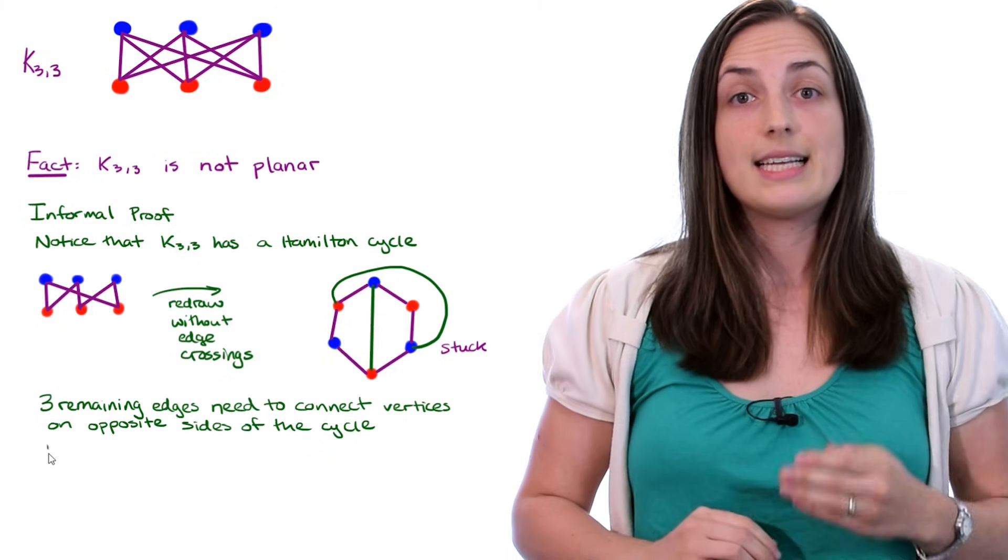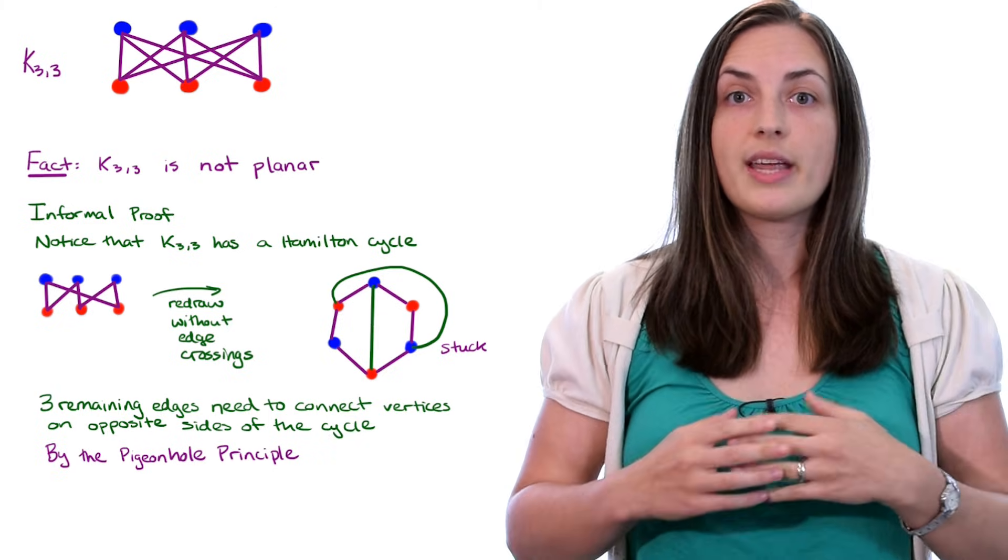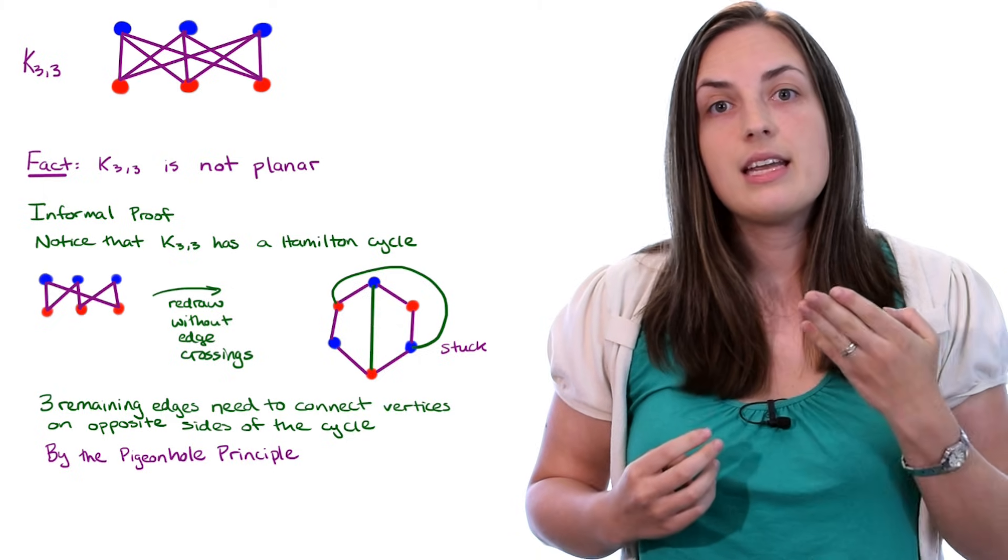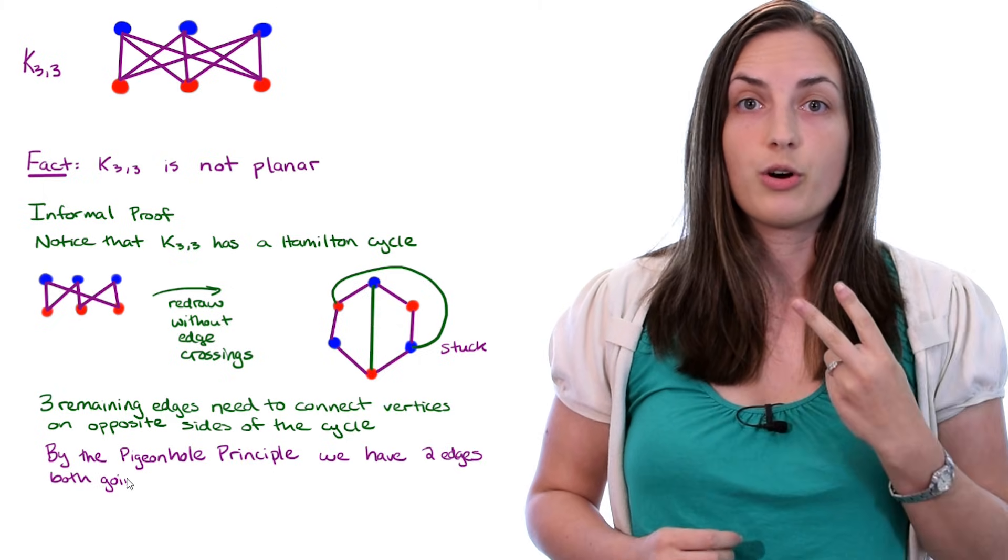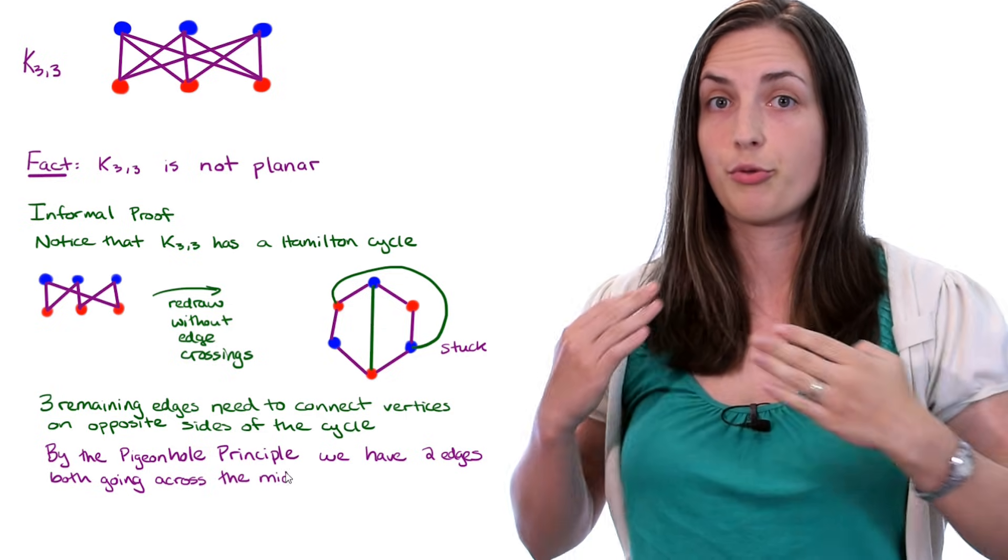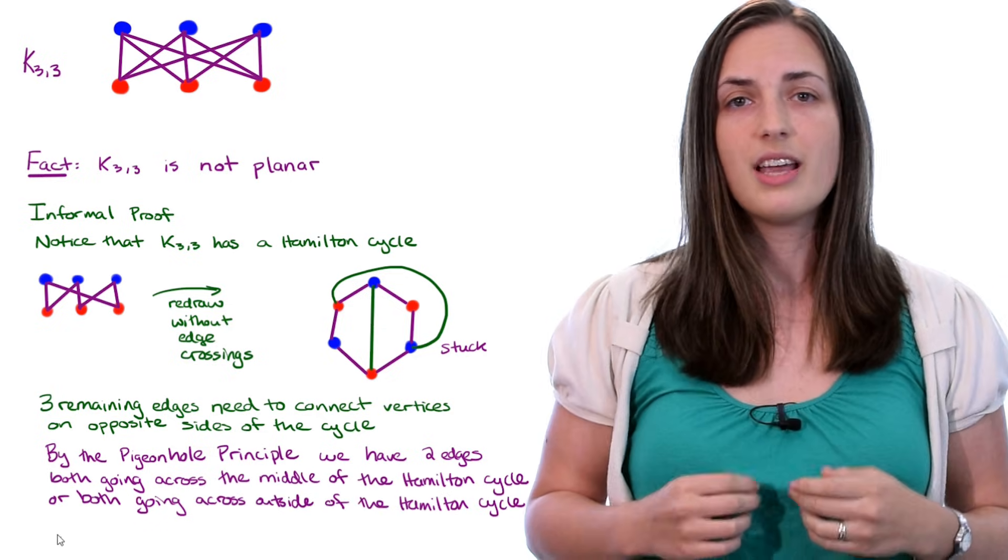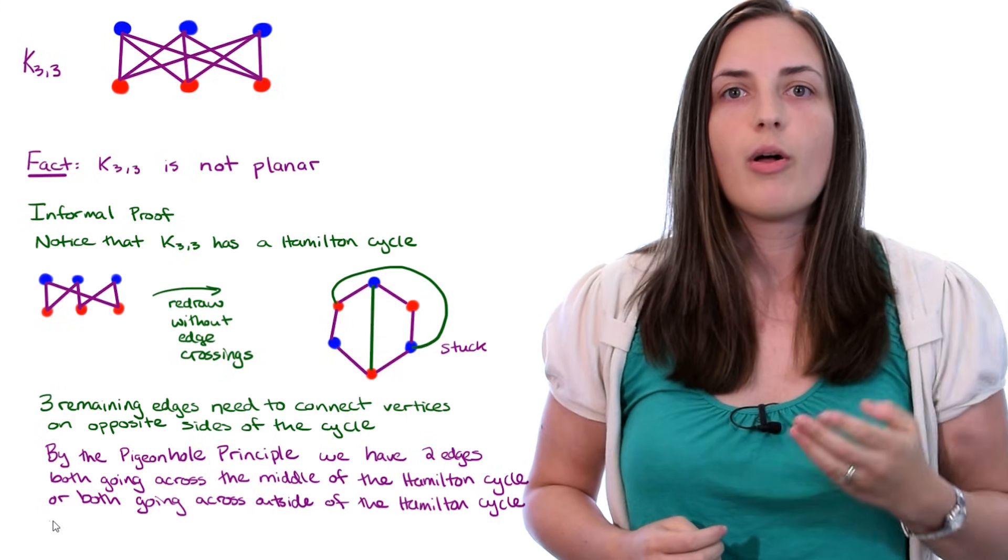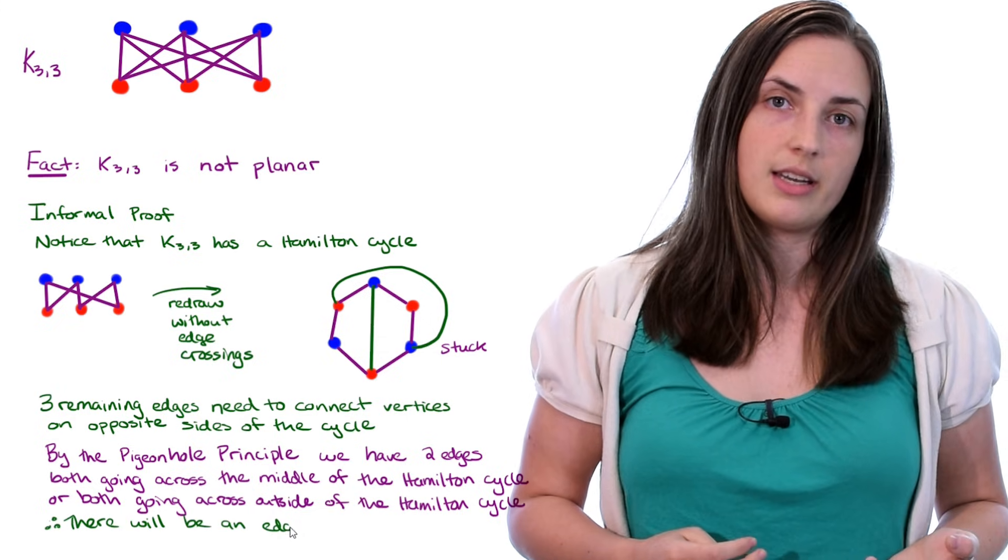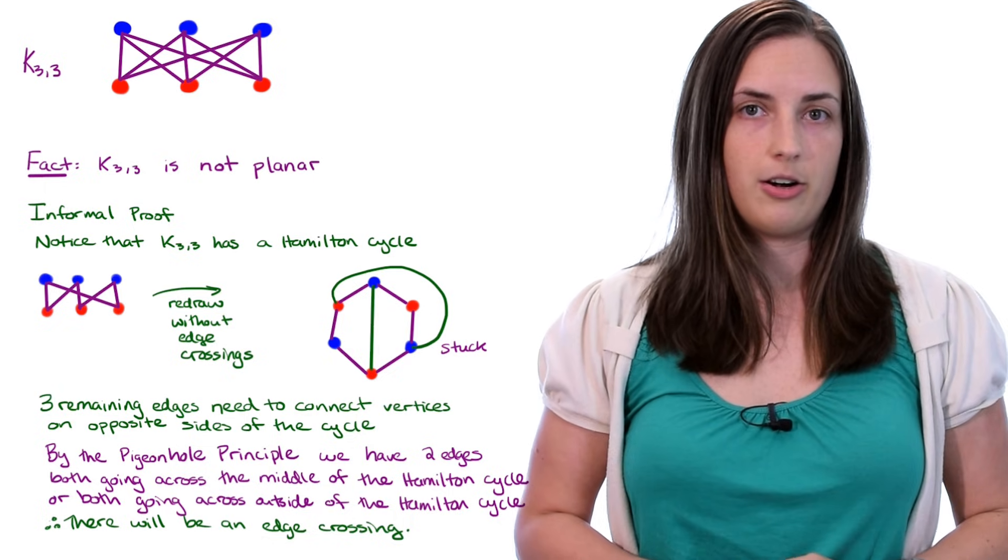What we're really saying here is that by the pigeonhole principle, we have three edges going into two zones and there will be two edges in one of those zones. In other words, there will be two edges which either go through the middle of the Hamilton cycle or through the outside of the Hamilton cycle. And in either of those cases, they're going to cross. So we will always end up with an edge crossing. And that's what tells us that K33 is not planar.